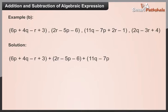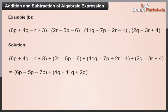Plus 11q minus 7p plus 2r minus 1, plus 2q minus 3r plus 4. Equals 6p minus 5p minus 7p, plus 4q plus 11q plus 2q, plus minus r plus 4r minus 3r, plus minus 1 plus 4 plus 3 minus 6. Equals minus 6p plus 17q.